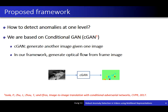The next question is how to detect anomalies at one level. We are mainly based on conditional GAN, or cGAN, a framework proposed by Isola et al. in their work on pixel-to-pixel image translation.